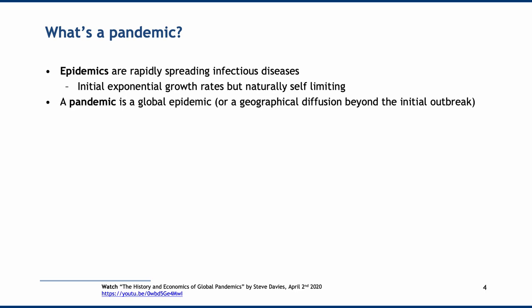On tracking COVID: there's a very good video called 'The History and Economics of Global Pandemics' by Steve Davies — I highly recommend it, and a lot of the content throughout this lecture comes from Steve's work. An epidemic is a rapidly spreading infectious disease; it tends to initially have exponential growth rates but will have some natural self-limitation. A pandemic is simply a global epidemic, or at least a geographical diffusion that extends beyond the initial outbreak.